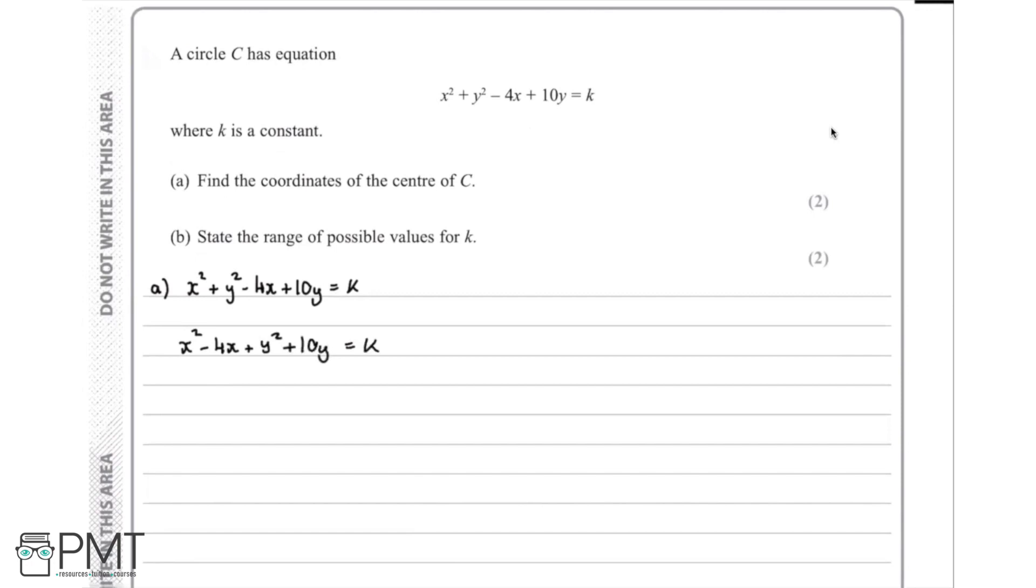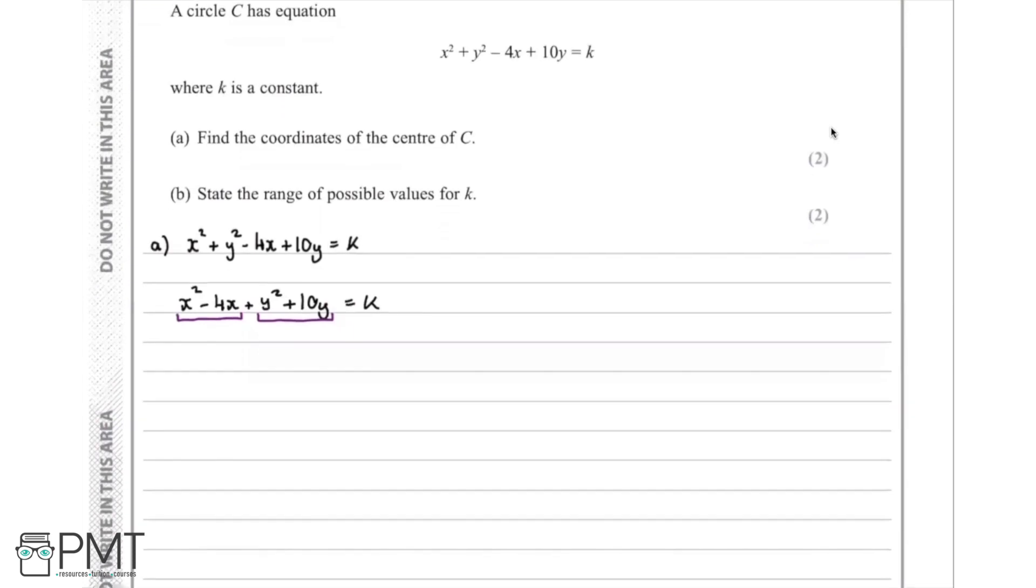And then what we want to do next is complete the square. So we can do that on x squared minus 4x and on y squared plus 10y. So we can do this as follows. To complete the square of x squared minus 4x, we have x minus half of that term inside the bracket. So we'll have x minus 2, then we square that.